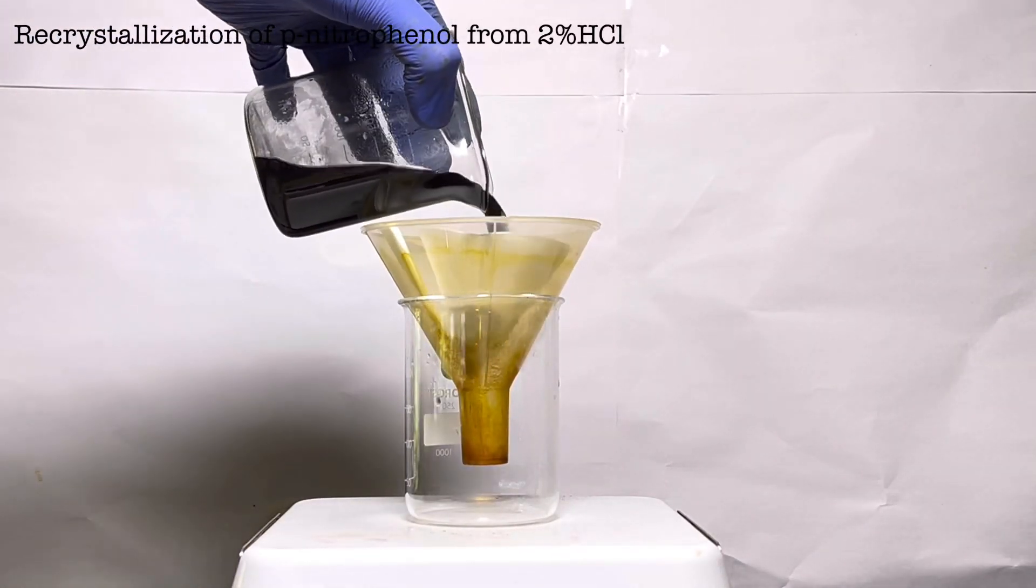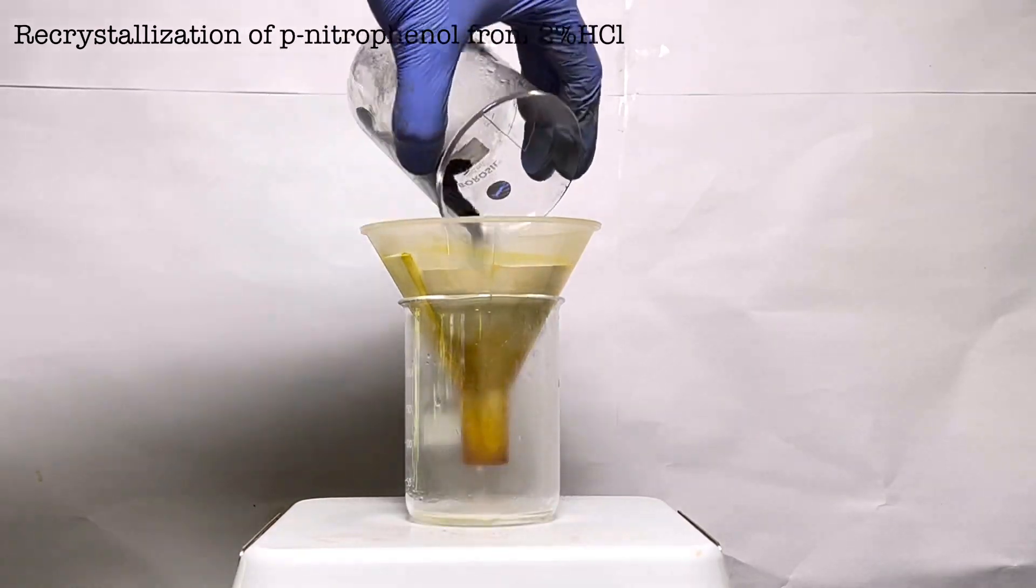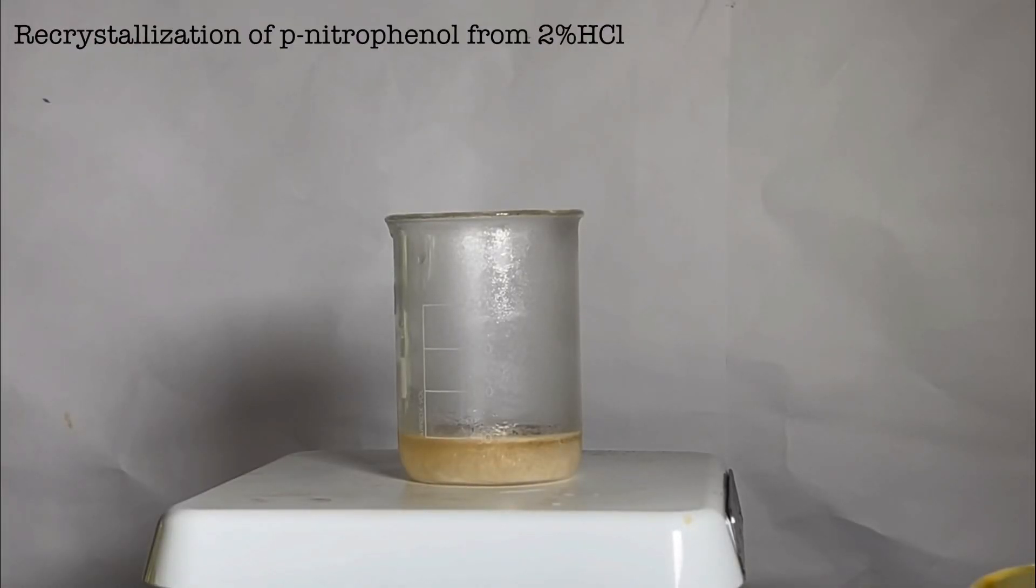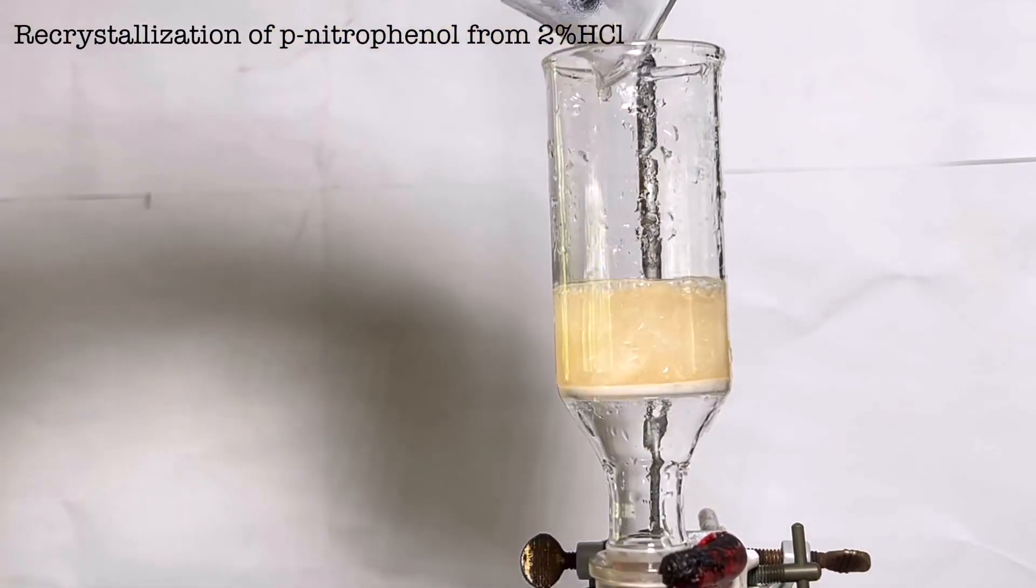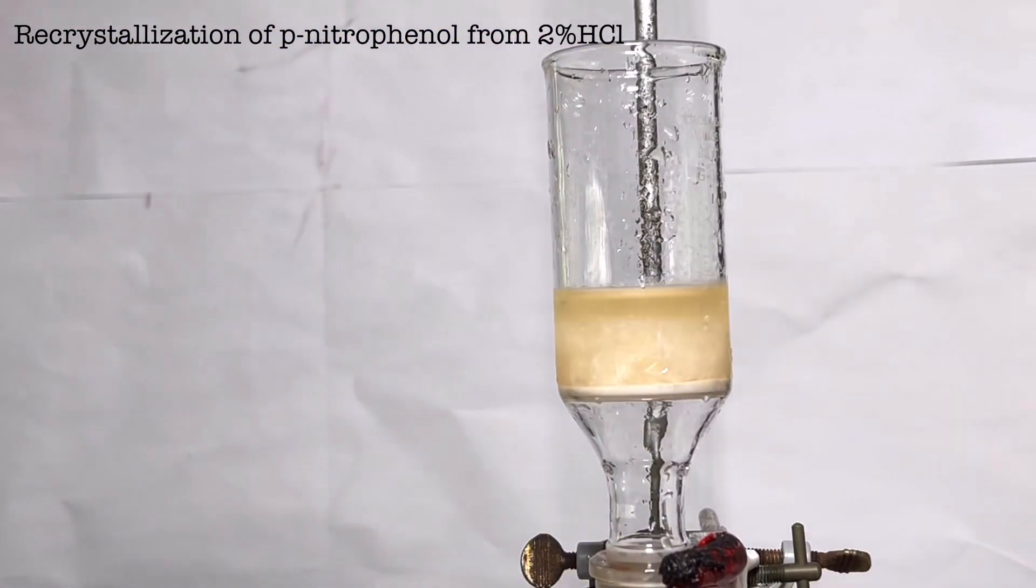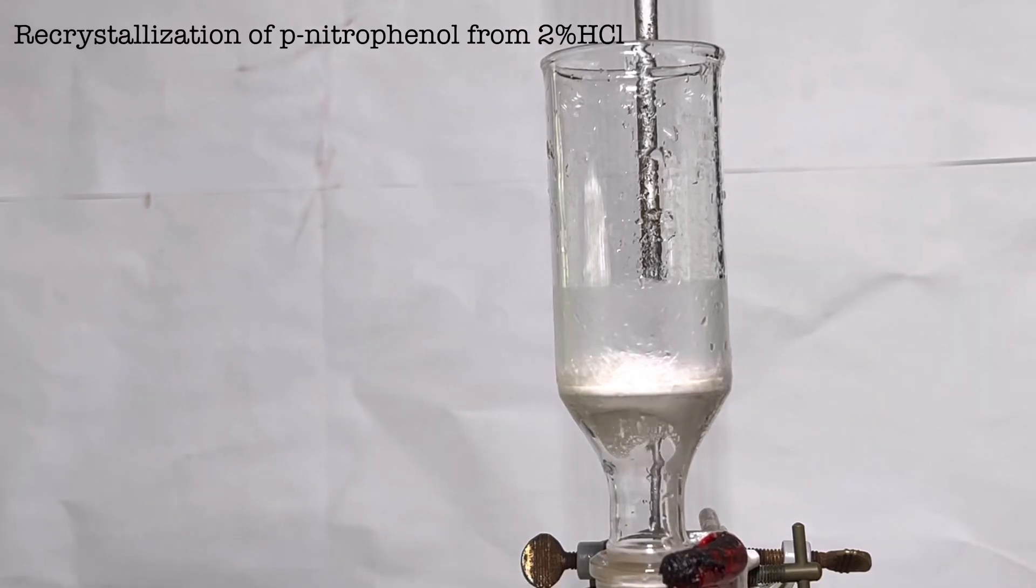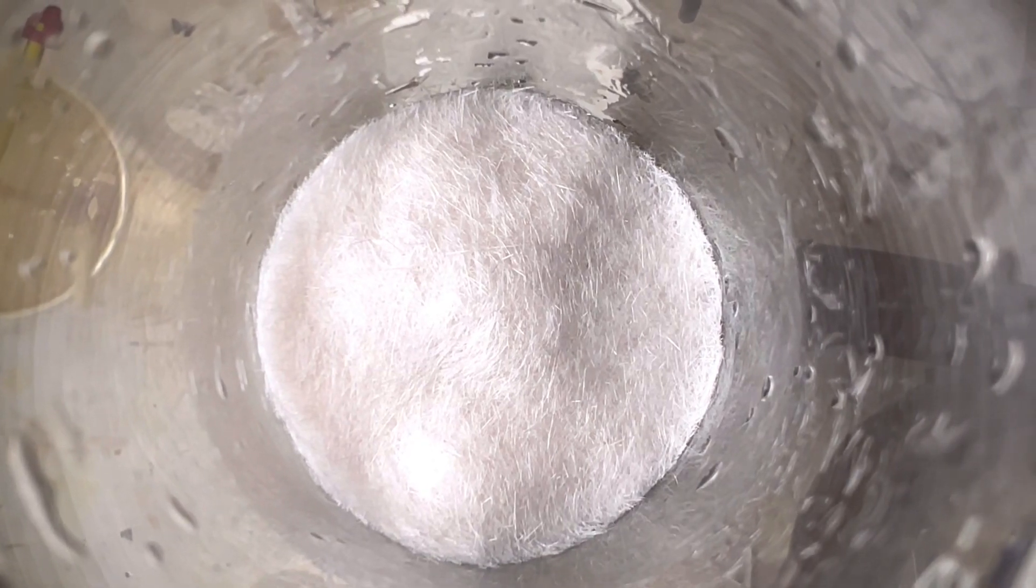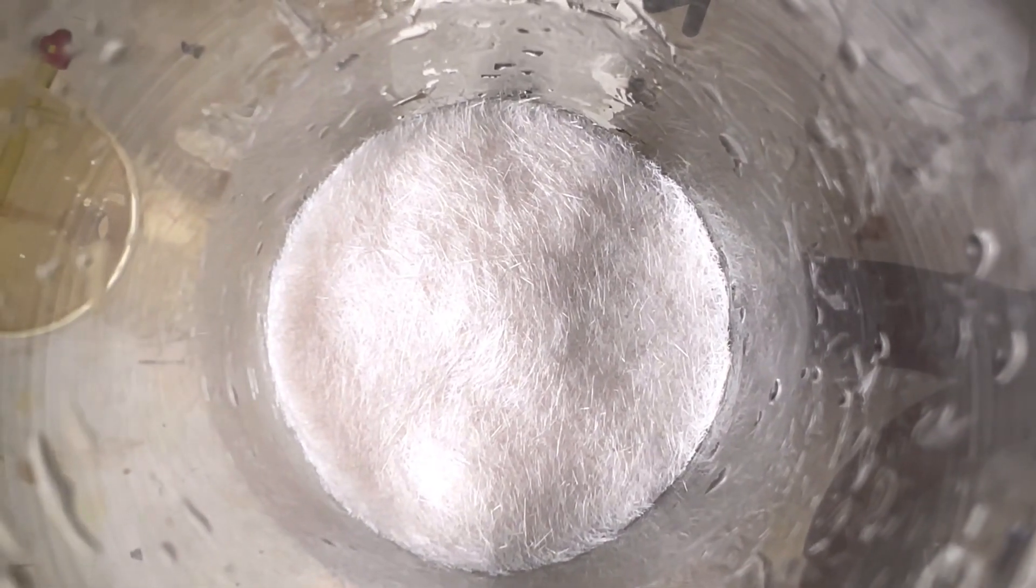The filtrate was much purer. It was put inside the fridge for a few hours. Then the crystals formed were filtered. Now we have much purer white crystals. It was scraped from the funnel and transferred to a bottle.